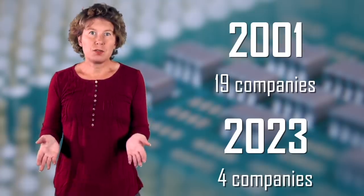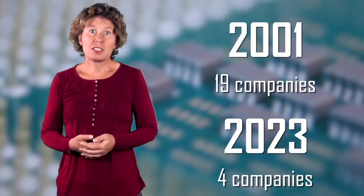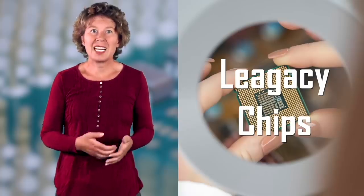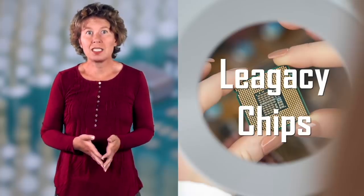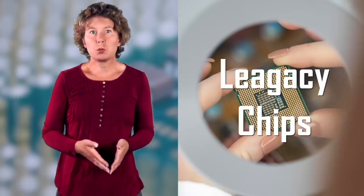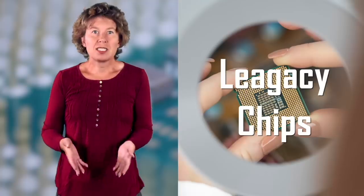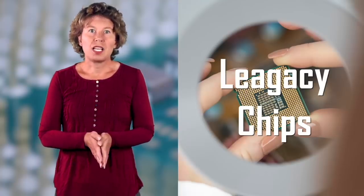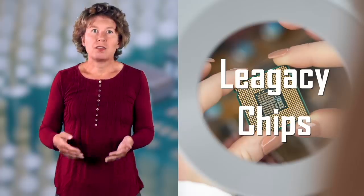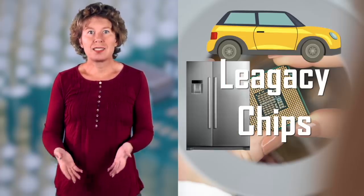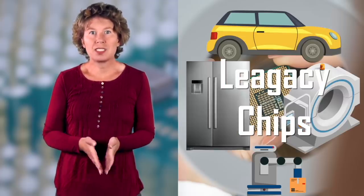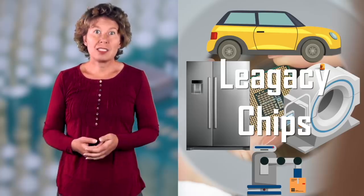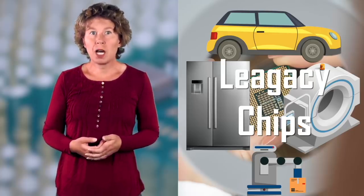Those other 15 companies? They've made a strategic shift to churn out older so-called legacy chips that are still widely used, but can be produced more cost-effectively. And honestly, it's a pretty savvy move. Legacy chips are everywhere. They're in cars, home appliances, medical gear, automation systems, you name it. And there's a long line of companies ready to snap them up.